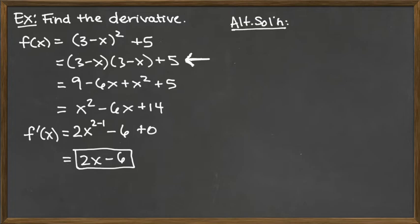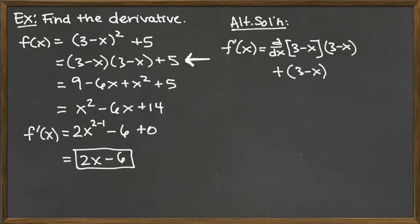So now we need the derivative, F prime of X, and we're going to get that utilizing the product rule for those two terms that are multiplied together. And then we just cannot forget to also handle that plus 5. So the product rule says we take the derivative of the first term. So we're taking the derivative of the first copy there of 3 minus X, and then to it we multiply it by that second copy of 3 minus X. And then to finish off the product rule, we would have the first copy of 3 minus X times the derivative of the second copy of 3 minus X.